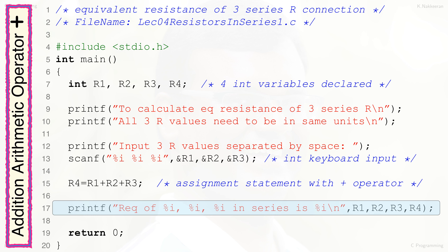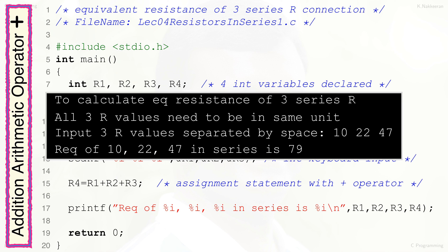The printf statement in line 17 displays the calculated equivalent resistance in a user-friendly way. Note that the input three resistances are also displayed on the monitor along with the calculated equivalent resistance. The number of values provided in the printf statement must equal the number and type of format specifications in the first string within the parentheses. The display of the execution of the .exe file, input three integer resistances, and final output are shown in the inset window.